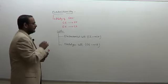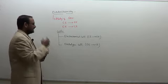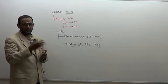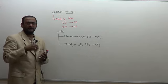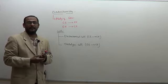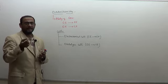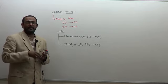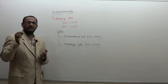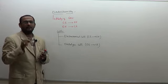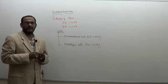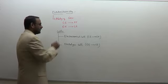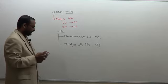In the electrochemical cell, the chemical energy gets converted to electrical energy. In the electrolytic cell, it carries out some chemical reaction to form new products — those reactions which are not spontaneous, which cannot take place on their own. Those non-spontaneous reactions can be carried out using electrical current. Such cells which carry out the chemical reaction by the passage of electricity are called electrolytic cells.